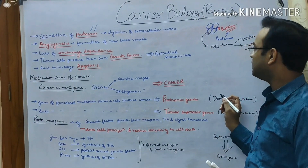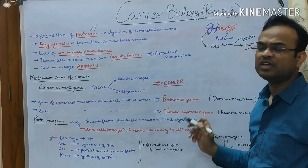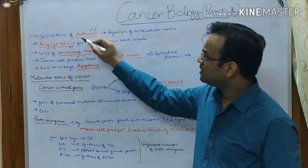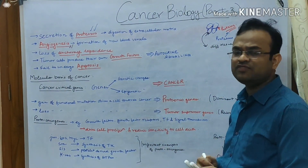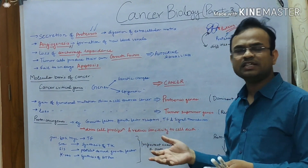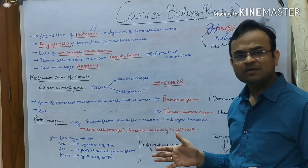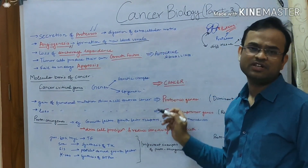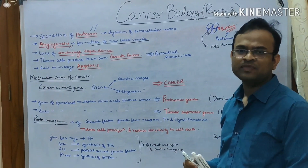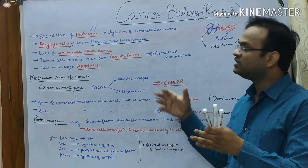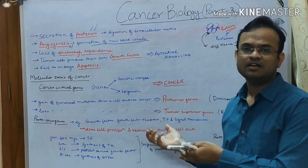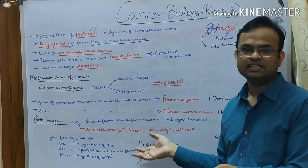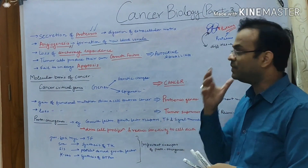Now coming to the next point, that is angiogenesis. These cancer cells also have a unique feature of angiogenesis. In normal cells also, angiogenesis is present. Angiogenesis means the formation of new blood vessels. New blood vessels are needed because they provide blood, and in the blood the nutritious elements are present which are utilized by the cells for their growth and development.